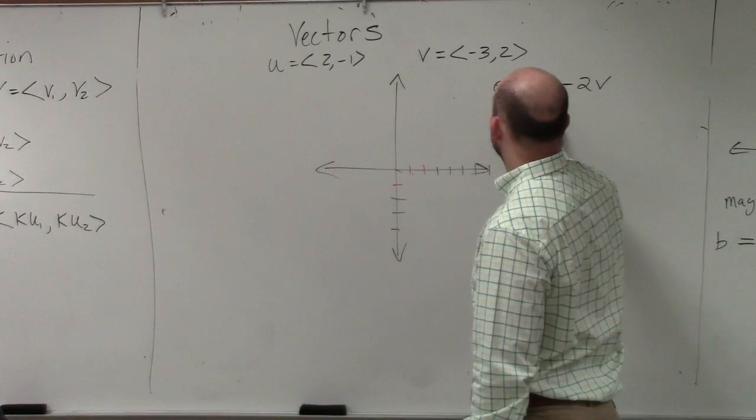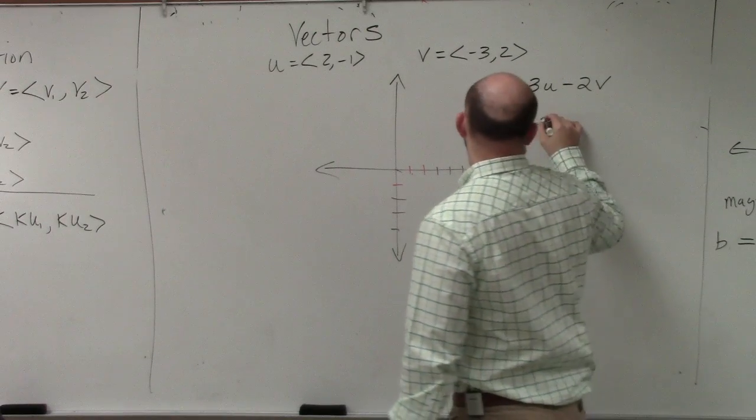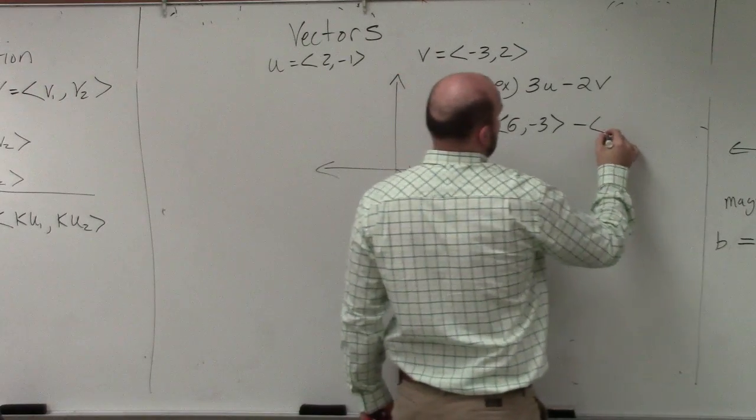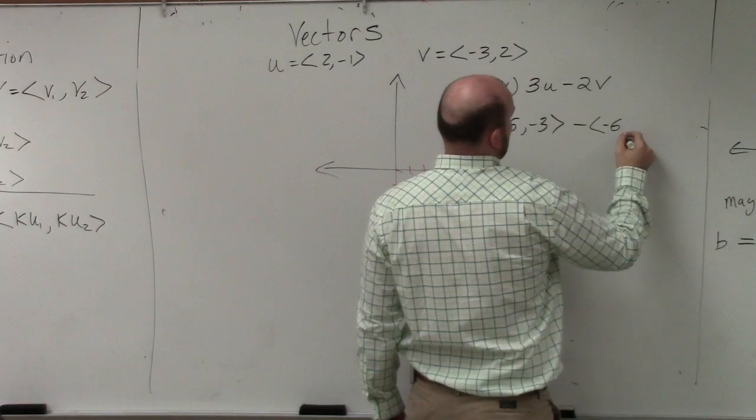So I'm just going to do 3u, which would be 6, negative 3, minus 2, which would be negative 6, negative 4.